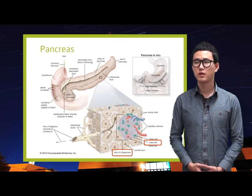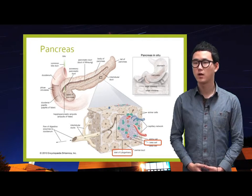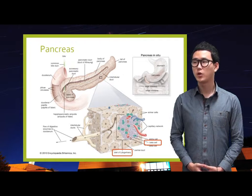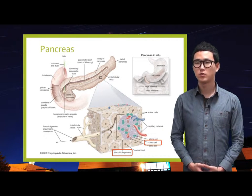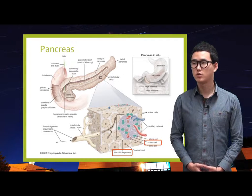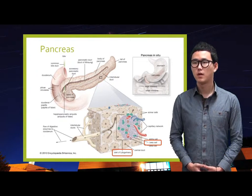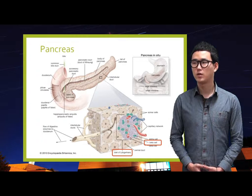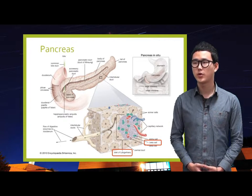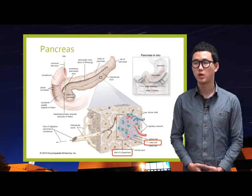The pancreas is an organ located across the back of the abdomen, behind the stomach. The pancreas is made up of two types of tissue. The exocrine tissue secretes digestive enzymes. These enzymes are secreted into a network of ducts that join the main pancreatic duct, which runs the length of the pancreas.